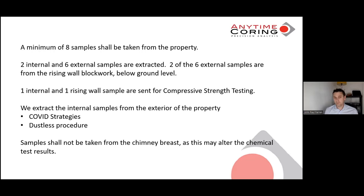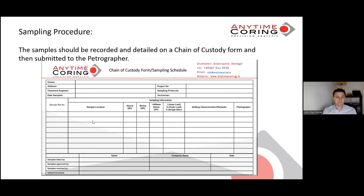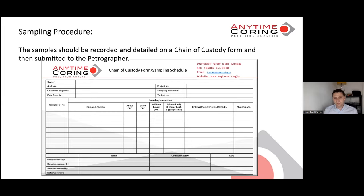The samples can't be taken from the chimney breast as this will alter the chemical test results. Here we have an example of the chain of custody form. The sample should be recorded and detailed on the chain of custody form and then submitted to the petrographer. We fill in the owner's name, address, the chartered engineer's name, and the date that the samples are extracted. We give each job a project number and use the IS-465 protocol. Each sample has its own unique reference number, felt-tipped on the bag and replicated on the form.